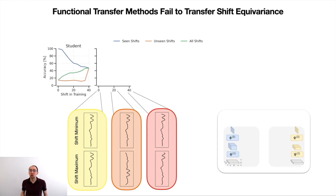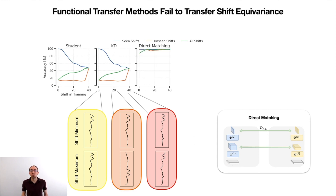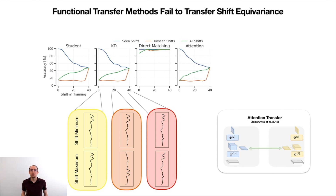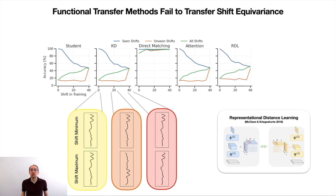Our student network, a simple MLP, does not generalize to unseen shifts, as can be seen by the orange line. The same goes when we train it with knowledge distillation from a CNN teacher. A sanity check shows that matching all layers directly works well. We also try attention transfer to impose more restrictions on the inner representations, but this fails as well at transferring the equivalence. Finally, representational distance learning also fails to capture this inductive bias.